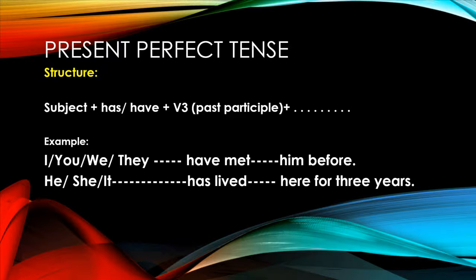For third person singular subjects like he, she, it, we add 'has'. For example, 'He has lived here for three years.' 'Lived' is the past participle form of 'live'. As you can see, these sentences refer to actions that started in the past but are still present in the present time.